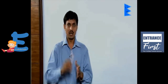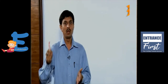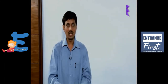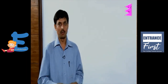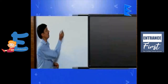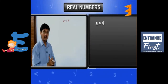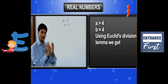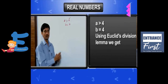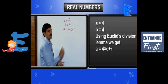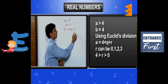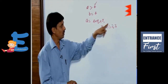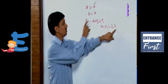The question is: prove that every positive integer in the form of 4n plus 1 or 4n plus 3 is odd, and any odd number greater than 4 can be expressed in one of these forms. Since B equals 4, the remainder R can only be 0, 1, 2, or 3 — because R must be less than 4 and greater than or equal to 0.